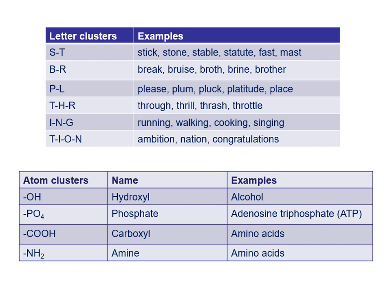Similarly, when you look at the periodic table of elements, certain atoms like to be clustered together into functional groups. OH is a very common functional group — we've seen that before in carbohydrates — and it's called a hydroxyl group. Hydroxyls are famously found in various alcohols. PO4 is called a phosphate group: one phosphorus atom and four oxygen atoms. The most famous example is adenosine triphosphate, ATP. C double-bonded to O with another OH is a carboxyl group, and NH2 is an amine group. Both are found in amino acids.